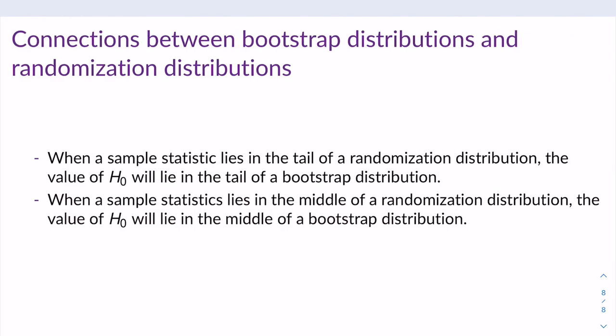The last thing we'll talk about is the connection between bootstrap distributions and randomization distributions, which mirrors the relationship between confidence intervals and hypothesis testing — bootstrapping is used for confidence intervals, randomization distributions are used for hypothesis testing. When a sample statistic lies in the tail of a randomization distribution, the null hypothesis value will lie in the tail of a bootstrap distribution, meaning it's an implausible value for the population parameter — analogous to rejecting your null hypothesis. When a sample statistic lies in the middle of a randomization distribution, the null hypothesis value lies in the middle of the bootstrap distribution, it is a plausible value for the population parameter, you should expect a large p-value, and you will fail to reject your null hypothesis.